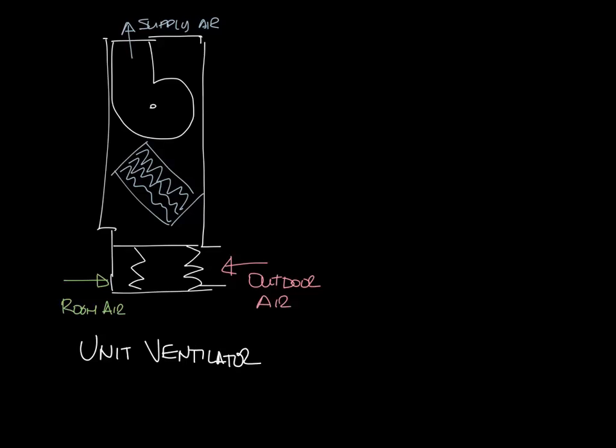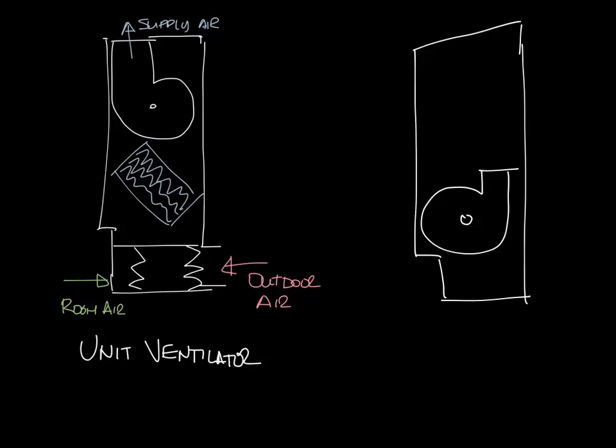Now let's draw a fan coil. So this is our cabinet here. The outside would be on this right wall. We're going to give it an angled top. Fan coils often have angled tops so that people don't put stuff on top of them because their cabinets are not as sturdy as a unit ventilator. We'll draw our blower down here this time and our water coil up here somewhere.